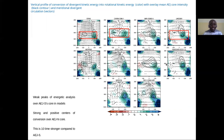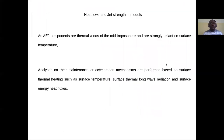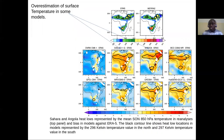We can clearly see that this conversion is ten times stronger over Africa East Allegiance north compared to Africa East Allegiance south. As Africa East Allegiance components are thermal winds of the mid-troposphere strongly related to surface temperature, analysis of their maintenance and acceleration mechanisms are performed based on surface thermal heating such as surface temperature, surface thermal longwave radiation, and surface energy heat flux.